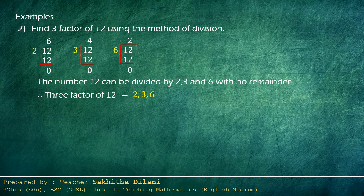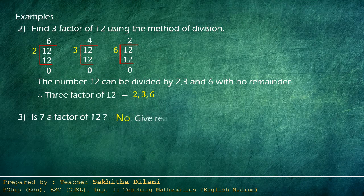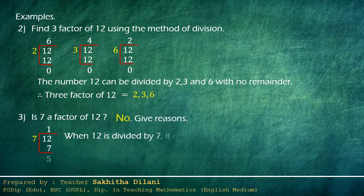Let's see another example. Is seven a factor of twelve? No. Give reasons. When twelve is divided by seven, you can see that the answer is one and it gives a remainder of five. So seven is not a factor of twelve. If it were a factor of twelve, it should give a zero remainder. I think now you may understand how to find factors using the method of division.